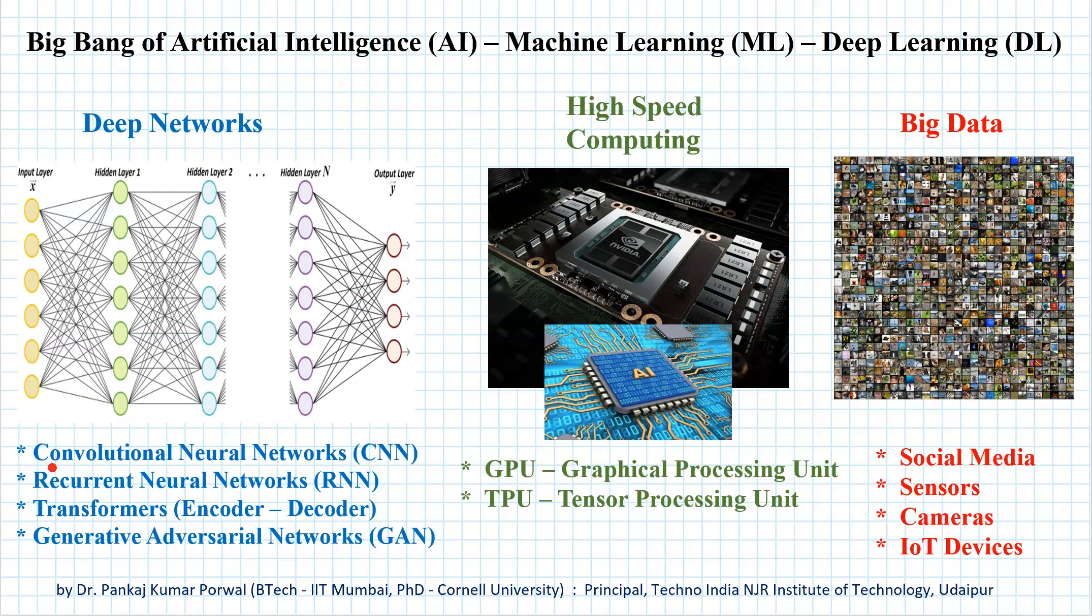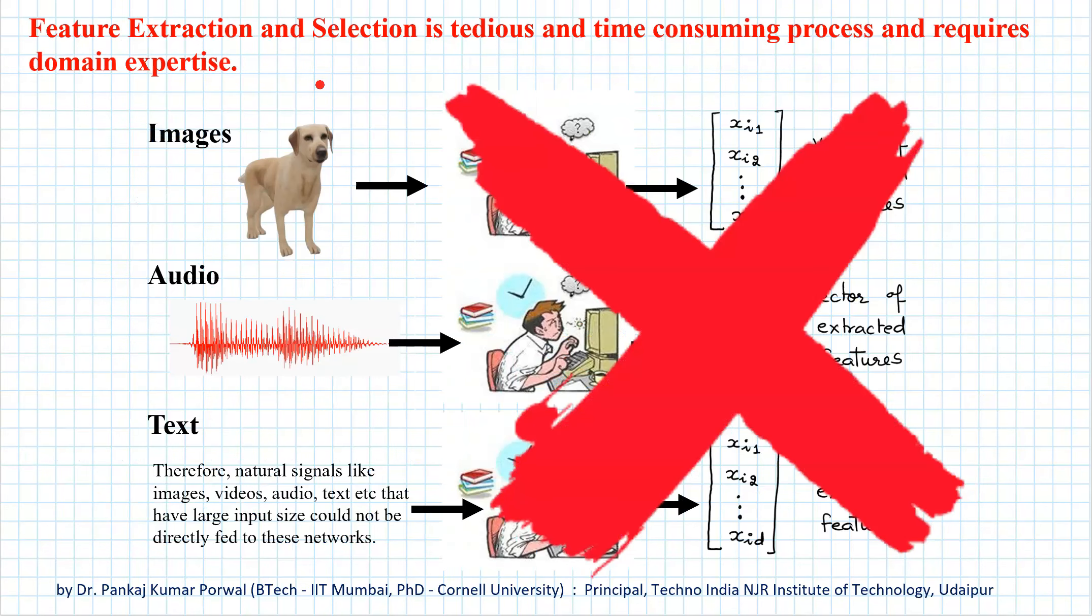Several new architectures and algorithms were developed like convolutional neural networks, recurrent neural networks, transformers, encoder-decoder, and generative adversarial networks. This enabled deep networks to learn complex relationships between large inputs and outputs, and the inputs did not have to be well-defined and skillfully extracted features from raw data by domain experts.